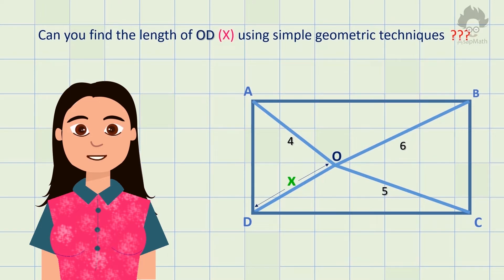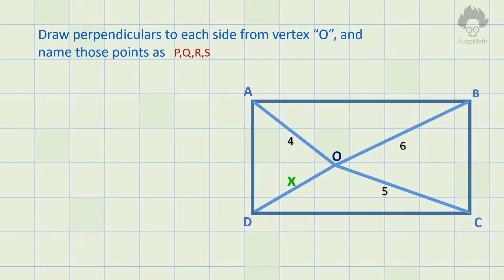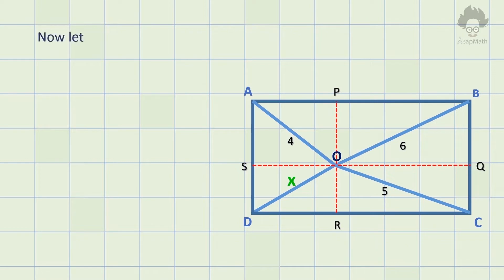You have to use basic techniques. Let's see how to do this. First, construct perpendicular bisectors for each side from point O and name them as P, Q, R, S as shown in the figure.